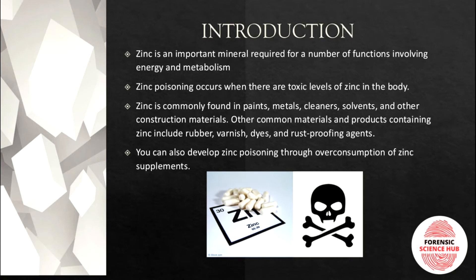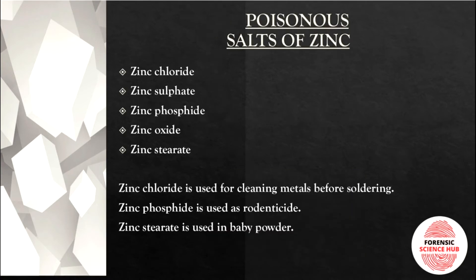Zinc forms compounds with chlorine, sulfur, phosphorus, etc., resulting in different poisonous salts: zinc chloride, zinc sulfate, zinc phosphate, zinc oxide, and zinc stearate. Zinc chloride is used for cleaning metals, zinc phosphate is used in making rodenticide, and zinc stearate is used in baby powder. Exposure to all these things might lead to zinc poisoning.